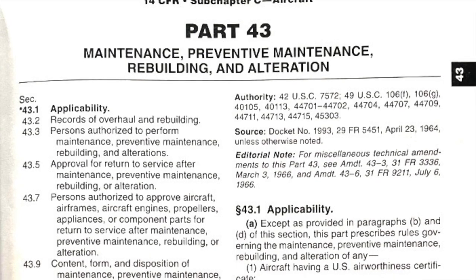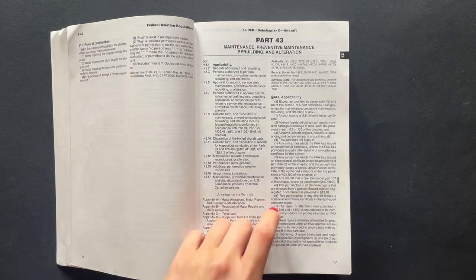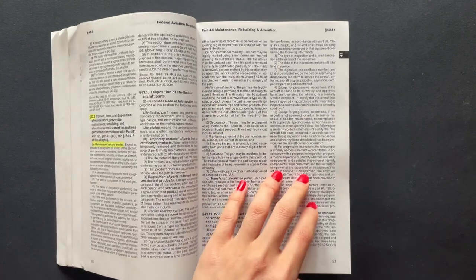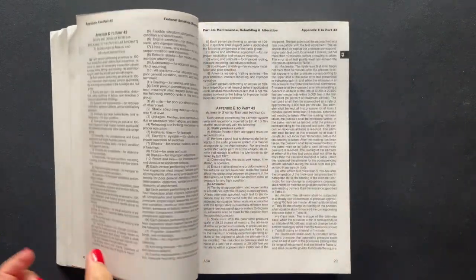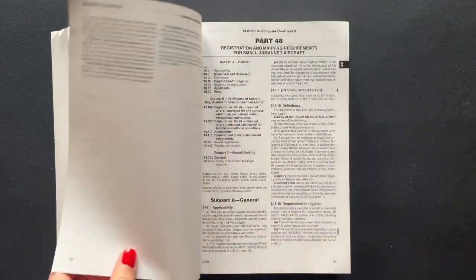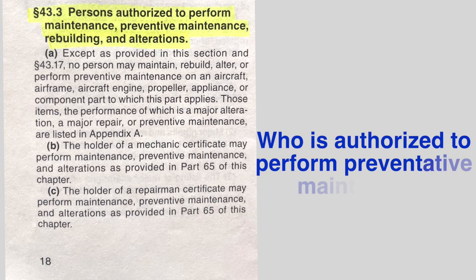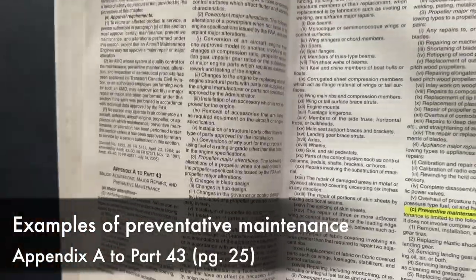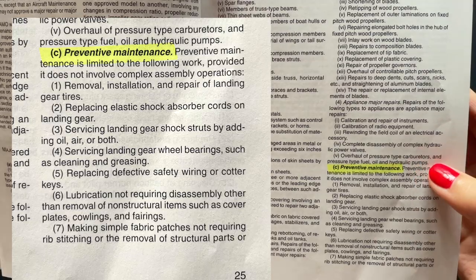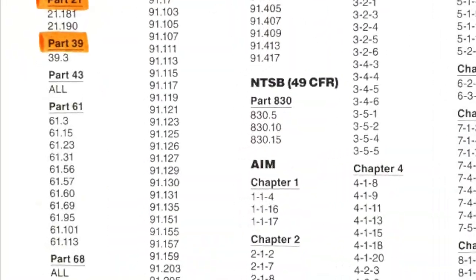Next up is part 43, which covers maintenance, preventive maintenance, rebuilding, and alteration. This study list demands you study all of it, but in my opinion that can be quite excessive for many pilots — this depends largely on whether a pilot is involved in building an aircraft or the level of involvement in its maintenance. Perhaps you might be interested in performing some preventive maintenance: part 43.3 explains who is authorized to perform this task, and appendix A to part 43 explicitly describes examples of preventive maintenance work.